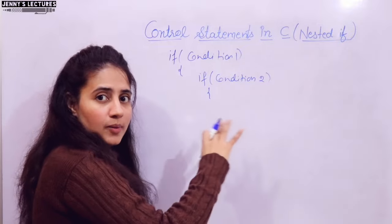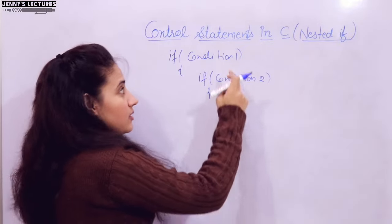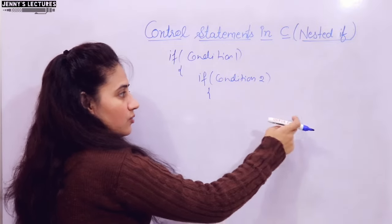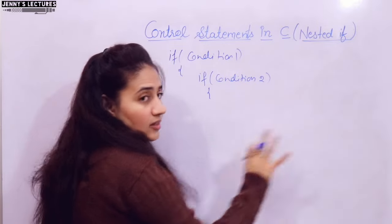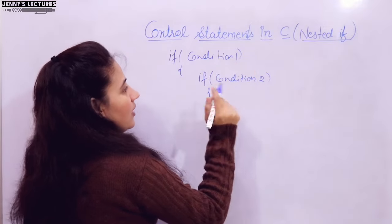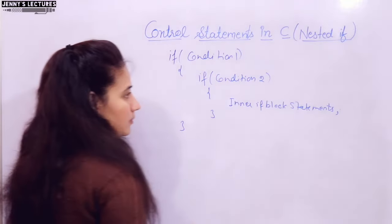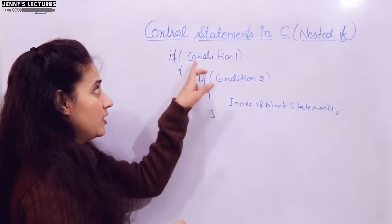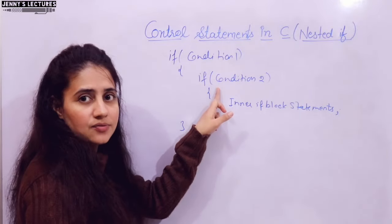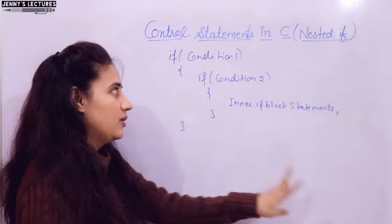It's not that you can only write two nested ifs — you can write multiple ifs. One if, within it another if, then within that another if, and so on. I'm just taking two ifs here to help you understand: I'm considering the first as the outer if and the second as the inner if.